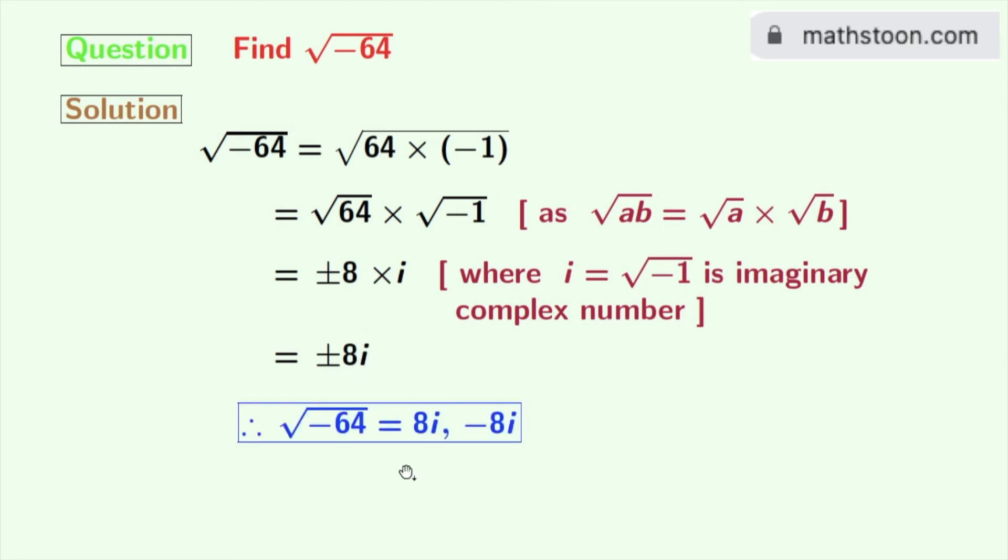So finally we get square root of minus 64 is equal to either 8i or minus 8i. And this is our final answer.